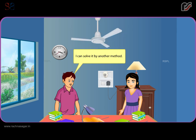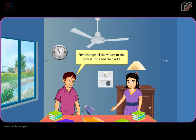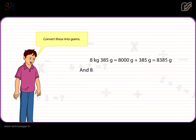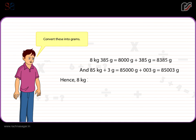Another method: first change all values to the lowest units, then add. Convert to grams: 8 kilograms 385 grams = 8,000 + 385 = 8,385 grams. And 85 kilograms 3 grams = 85,000 + 3 = 85,003 grams. Hence, 8 kg 385 g + 85 kg 3 g = 8,385 grams + 85,003 grams.